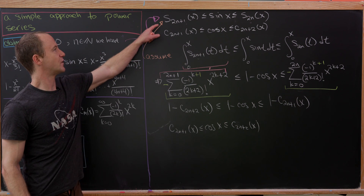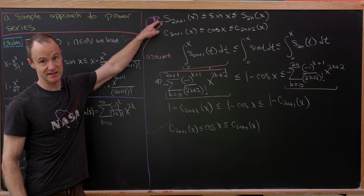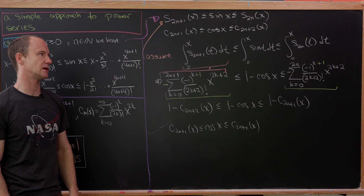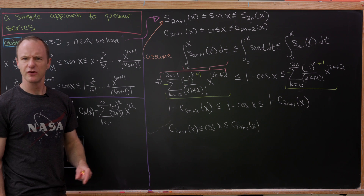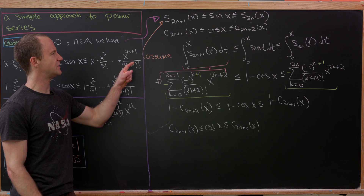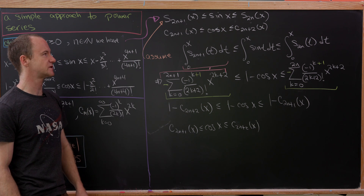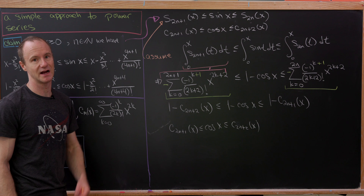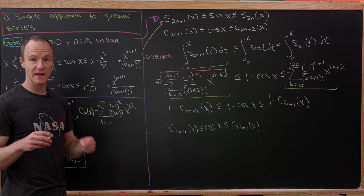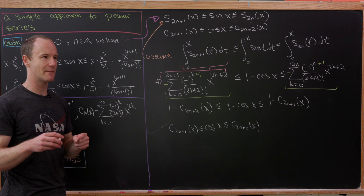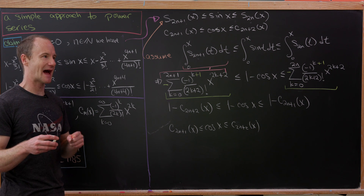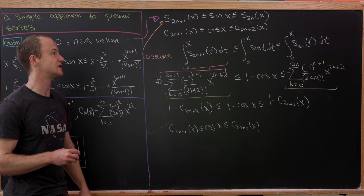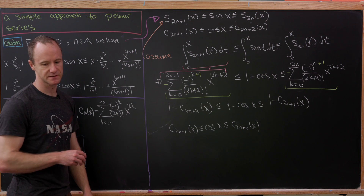So assuming the sine inequality gives us the cosine inequality, and you can similarly show that assuming the cosine inequality produces the sine inequality — building the full inductive ladder starting from the base case.